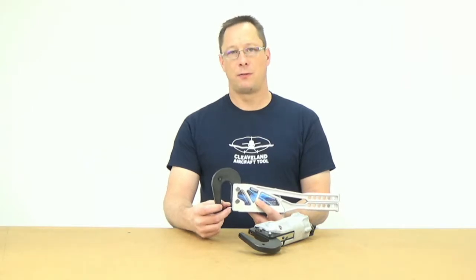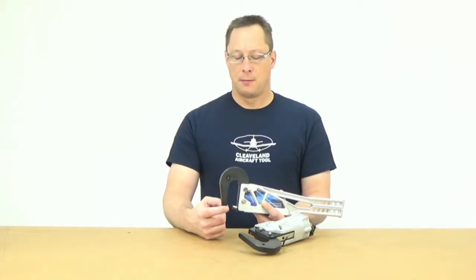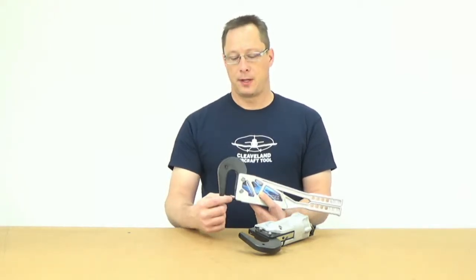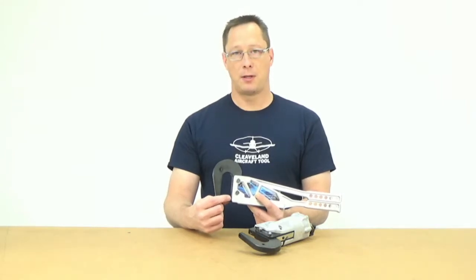Both of our adjustable rams, you'll find that they're the only ones in the industry that have a 32-pitch thread. And the reason for that is rivets come in 32nds of an inch. So one full revolution of either of these rams is a full rivet length. A half revolution is a half length. So those kind of nuances make our tools different than you'll find anywhere else. But both of them come with an adjustable ram in the tool.